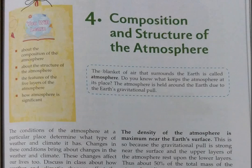Here a box is given. The blanket of air that surrounds the earth is called the atmosphere. Do you know what keeps the atmosphere at its place? The atmosphere is held around the earth due to the earth's gravitational force.